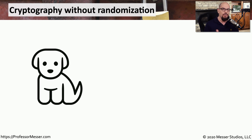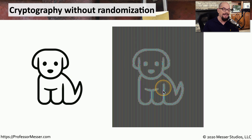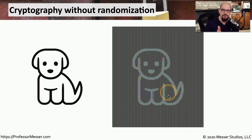An example of cryptography without any type of randomization can be seen here. I have a picture of this little puppy and I performed an encryption of this puppy. And as you can see, the encrypted form of this looks almost exactly the same as the puppy I had originally, except sort of in a reverse form. You can easily see the image that I started with because this type of cryptography did not add any type of randomization. This was an encryption done with 128-bit ECB,